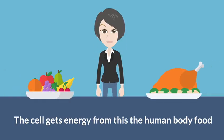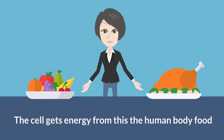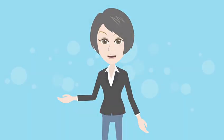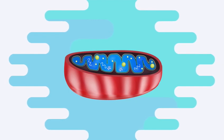Mitochondria: The cell gets energy from this. The human body food we have digested reacts with oxygen in the mitochondria to make energy for the cell.